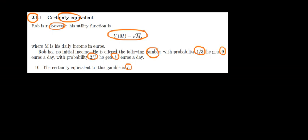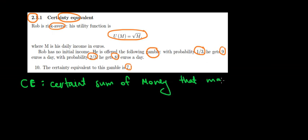So first of all, what is certainty equivalent? Certainty equivalent is the certain amount of money that makes us indifferent between getting it and gambling. So, certain sum of money that makes us indifferent between gambling and just taking the money.